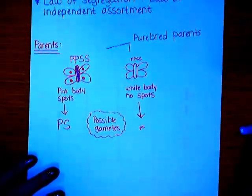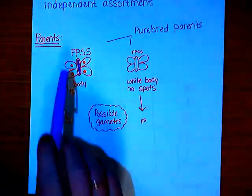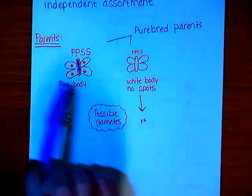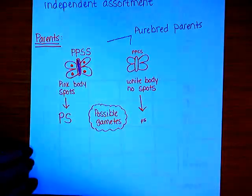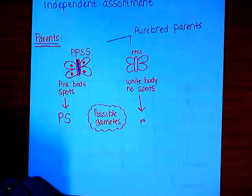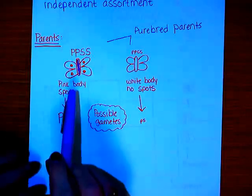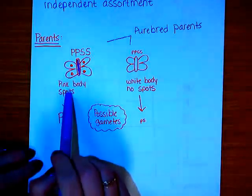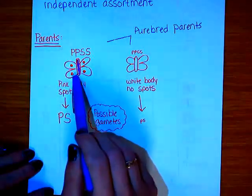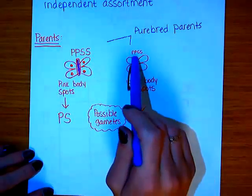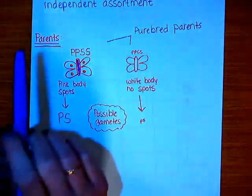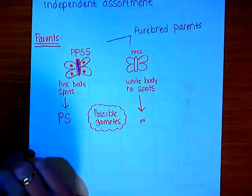We're going to do one example of a di-hybrid cross using butterflies. We're going to start with two parent butterflies. The traits we're going to be tracking are body color and wings. We're going to cross one parent who has a pink body with spots on the wings, and a parent who has a white body with no spots.